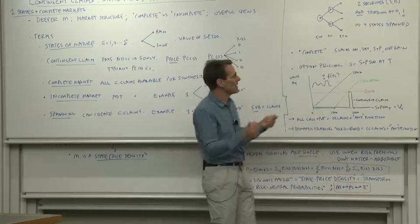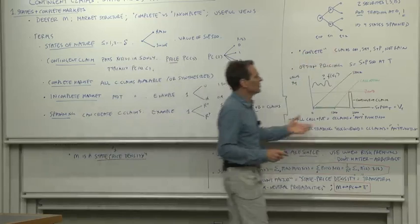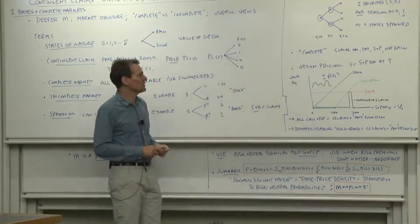But we'll often refer to a market as complete if all claims on, for example, the S&P 500 going up and down are traded, even though claims on rain aren't traded. So that's, in some sense, complete enough, and we use the complete word in that case.